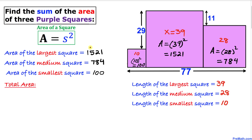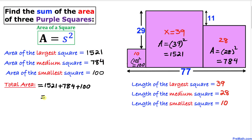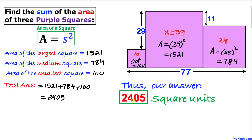Now we calculate the total area by adding the individual areas: 1521 plus 784 plus 100 equals 2405. So the total sum of the areas is 2405 square units. Thanks for watching, and please don't forget to subscribe to my channel for more exciting videos.